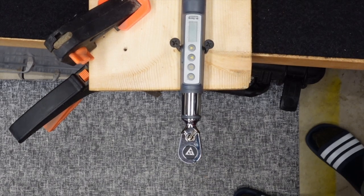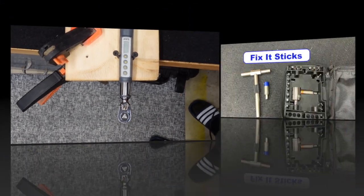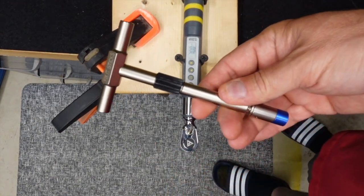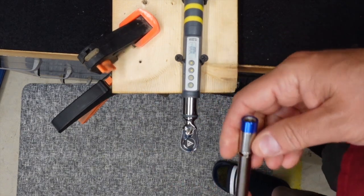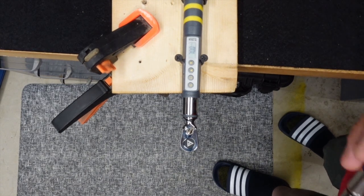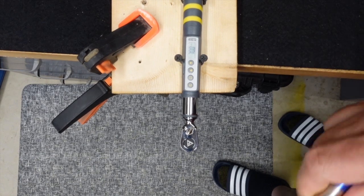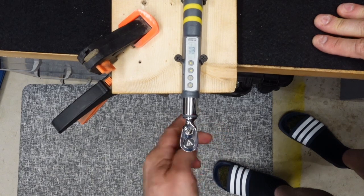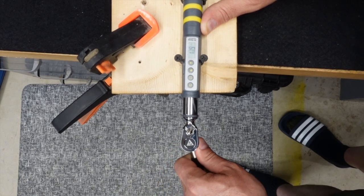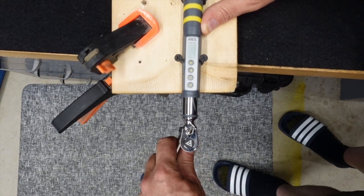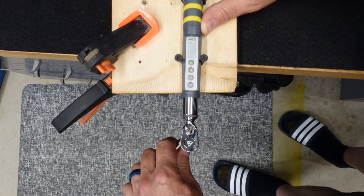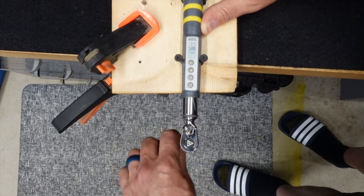First we are going to start off with the Fix It Sticks. Here we go, I'm going to do my best to be smooth and consistent. To make it easier to reach I'm going to put it on this end. Even though I've got this clamped down, I'm still going to hold it and I'm just going to go nice and slow.